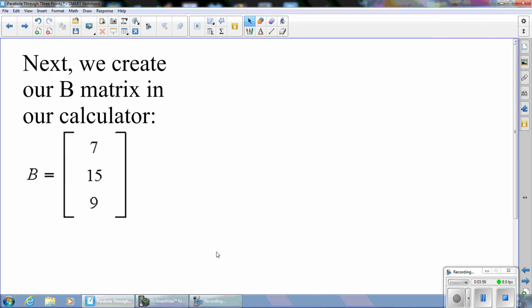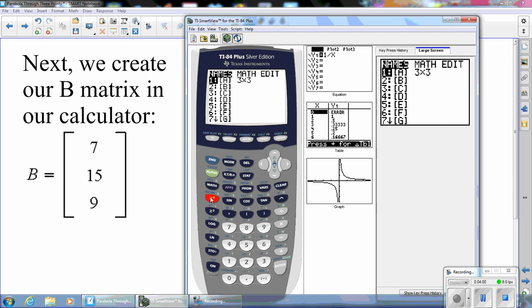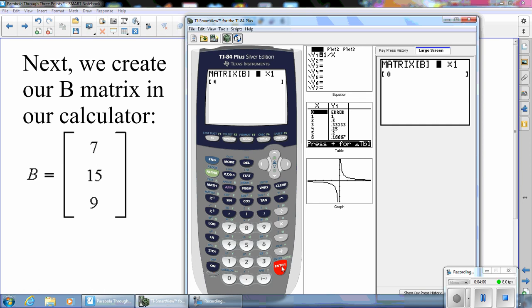We now want to create matrix B. So we go back to the matrix menu. And we edit matrix B. And matrix B is going to be a 3 row by 1 column matrix. So it's 3 by 1. And the elements are 7, 15, and 9. And now we've created our B matrix.